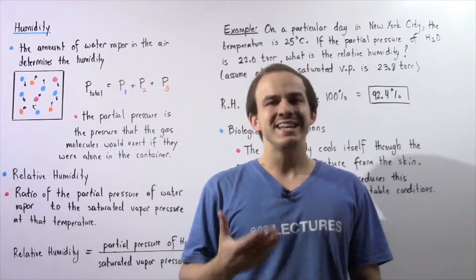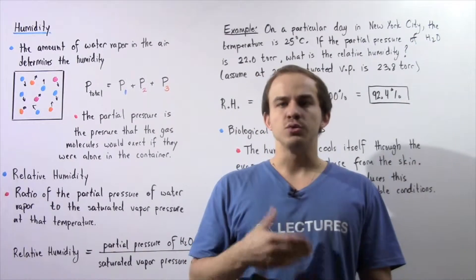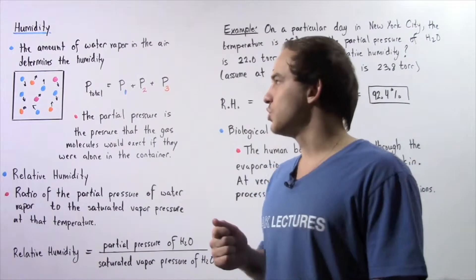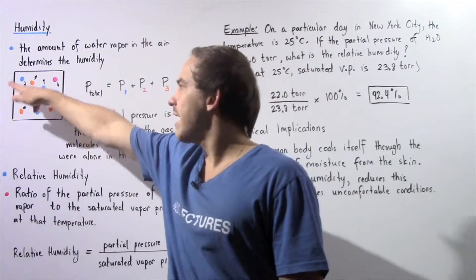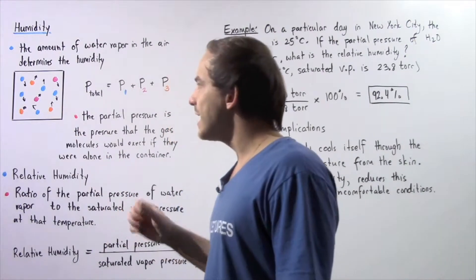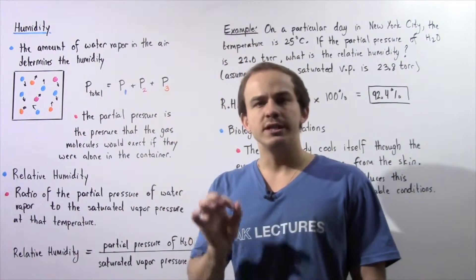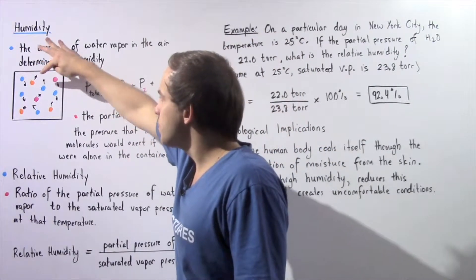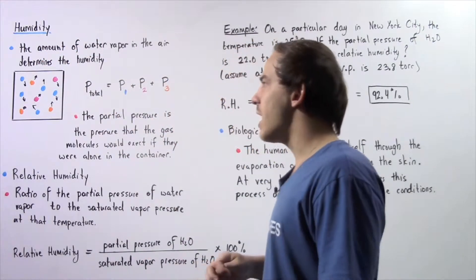Water vapor is simply liquid molecules that have evaporated and become gas molecules. Let's suppose we have the following closed container. Our system of gas is composed of three different types of gas molecules: the blue, the orange, and the red gas molecules.